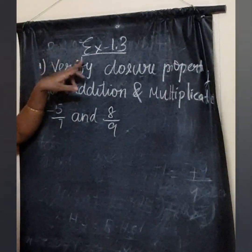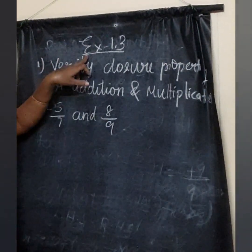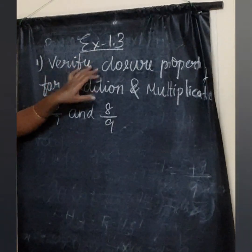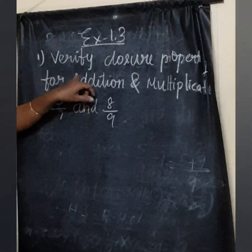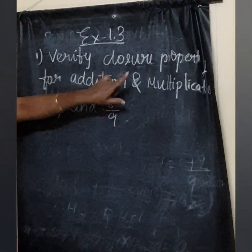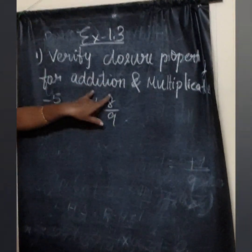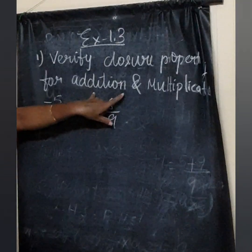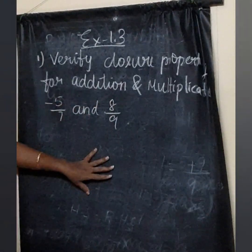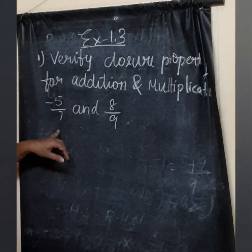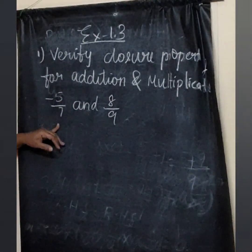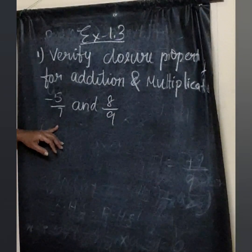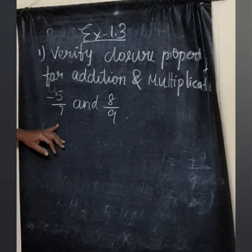Let's see Exercise 1.3. First question: verify the closure property for addition and multiplication of two rational numbers minus 5 by 7 and 8 by 9.